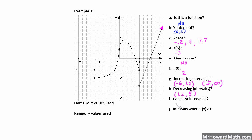Constant interval: that's going to be where it's flat. Notice there is an arrowhead going to the left, so from negative infinity to negative 6. Negative infinity always gets a parenthesis, and negative 6 also gets a parenthesis because at that point it's starting to increase, so it's undefined there. Constant interval: (−∞, −6).